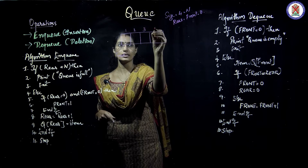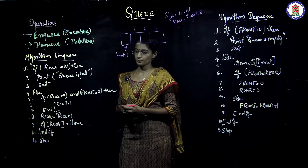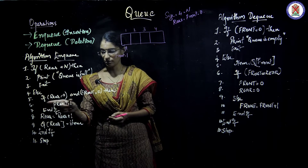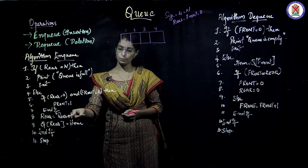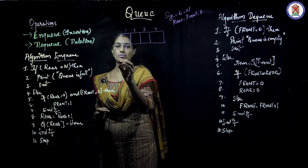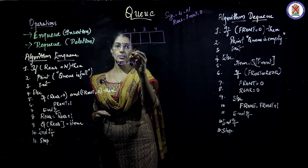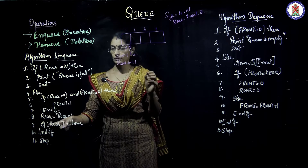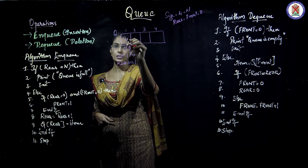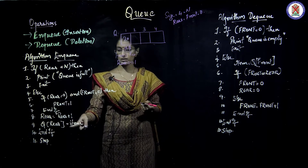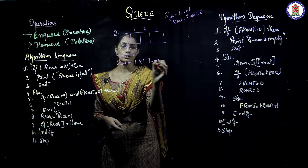We have the first, second, third, and fourth indices. Front will be pointing to index 1. Now, out of the if condition, rear is equal to rear plus 1. Initially, rear was 0, so 0 plus 1 equals 1 — rear is now pointing to 1. Then Q of rear is equal to item. Let the item be 20. So 20 is inserted at Q of rear — that is, Q[1] is given the value 20.